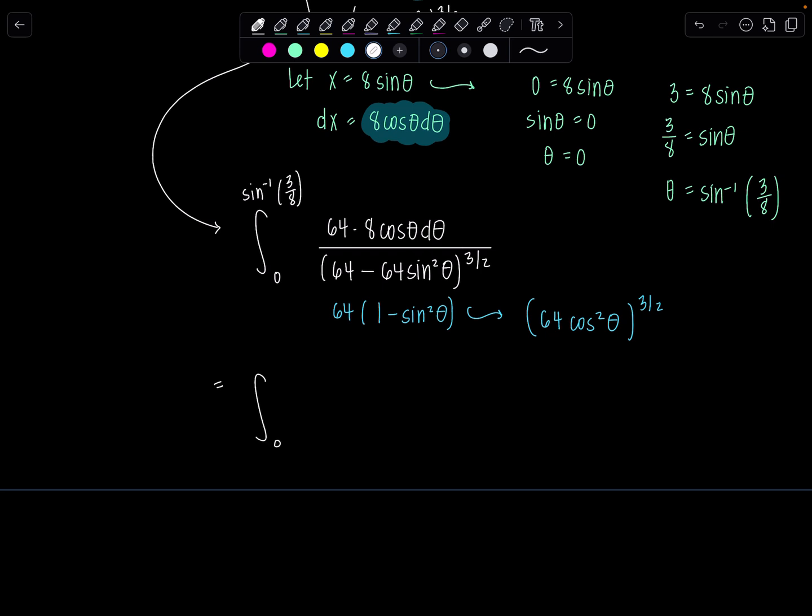So after this, what you want to do is distribute that exponent, that 3 halves through. I'm not going to do anything with the numerator. The only thing I would do maybe, don't multiply it out. I don't even give my students a calculator. So 64 times 8, that's 8 to the 3rd power. You'll see why I want to write it that way. And then we've got cosine theta d theta up there. This 3 halves distributes. So 64 to the 3 halves means you take the square root of 64, and then you raise it to the 3rd power. So this is going to become 8 to the 3rd power.